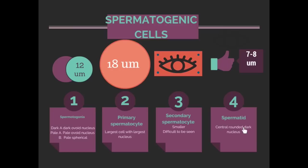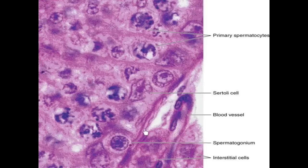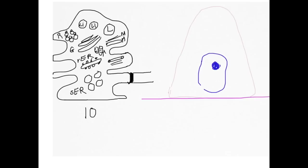This picture of the seminiferous tubule shows the myoid cells, blood vessels in the interstitial tissue lined by flat endothelial cells, and the interstitial cells of Leydig. Here we have a pale large nucleus with prominent nucleolus — this is the Sertoli cell. Here we have a rounded cell with a relatively dark nucleus — this is a spermatogonium. Here we have a very large cell with characteristic appearance of coiling of chromosomes — these are the primary spermatocytes.